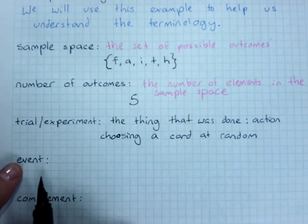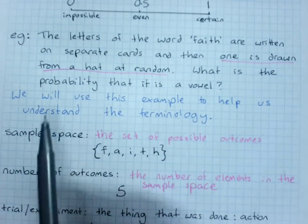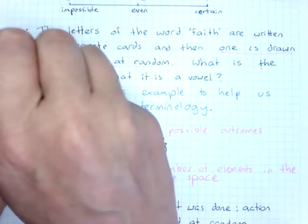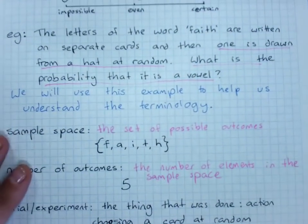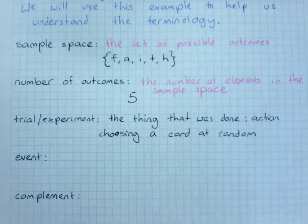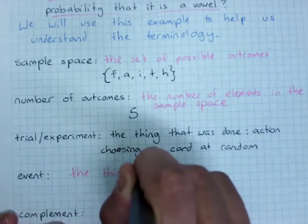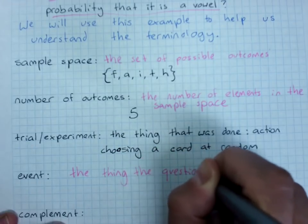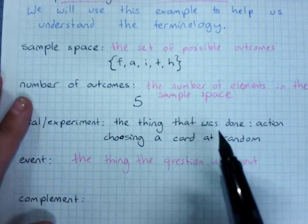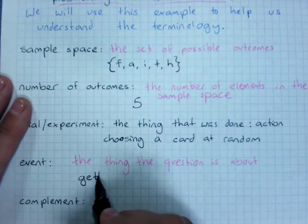The event is the thing that we're trying to find out about. So the question has the event in it - what is the probability that the letter is a vowel? So the event that we're wondering about - the question is about what's the probability of getting a vowel - so the event is getting a vowel.